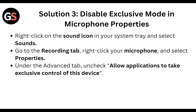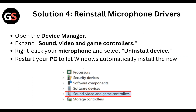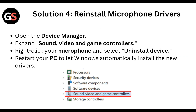Then, disable Exclusive Mode in the microphone properties. Right-click on the sound icon in your system tray and select Sound Settings. Go to the Recording tab, right-click on Microphone and select Properties. Under the Advanced tab, uncheck Allow applications to take exclusive control of this device.